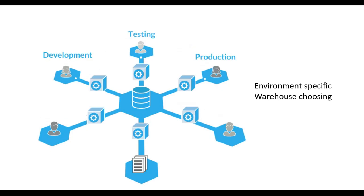Environment-specific warehouse choosing — in a real-time project, you have development, testing, and production environments. Based on the environment, your Virtual Warehouse size differs. In production, you are operating millions of records and many tables, so you have to go with medium or large size. But in the development environment, we don't operate with millions of rows — for unit testing, we operate with just thousands or lakhs of rows, so extra small or small is enough.